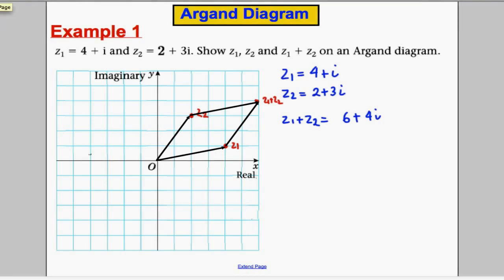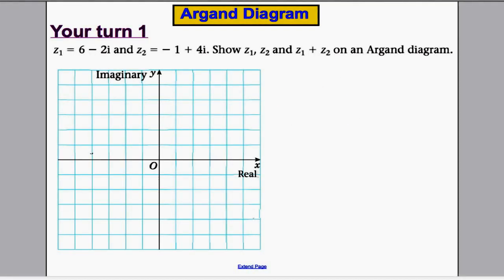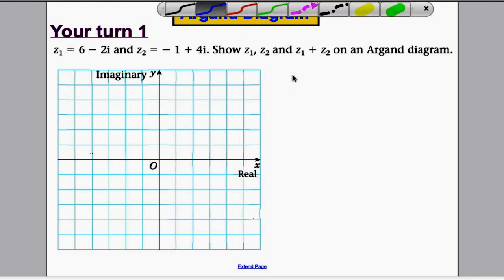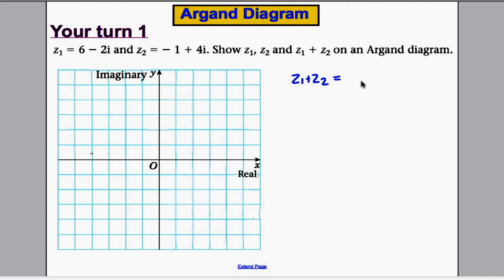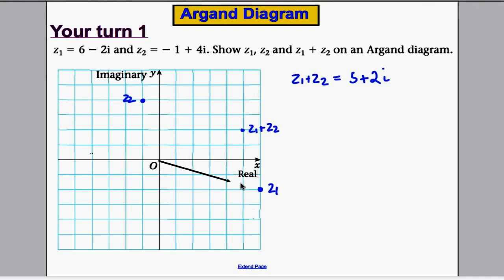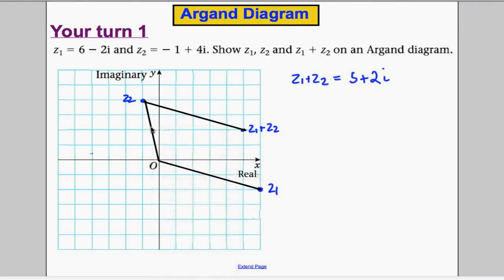Time for you to have a go. Working through it: z1 plus z2 in this case equals 5 plus 2i. Z1 is 6 minus 2i — here. Z2 is minus 1 plus 4i — over here. And z1 plus z2 is 5 plus 2i — there. Let's check that the corner of a parallelogram idea still works: there's the vector to z1, there's the vector to z2, and z1 plus z2 is indeed the corner of the parallelogram. So it makes sense and fits in with what we just talked about.